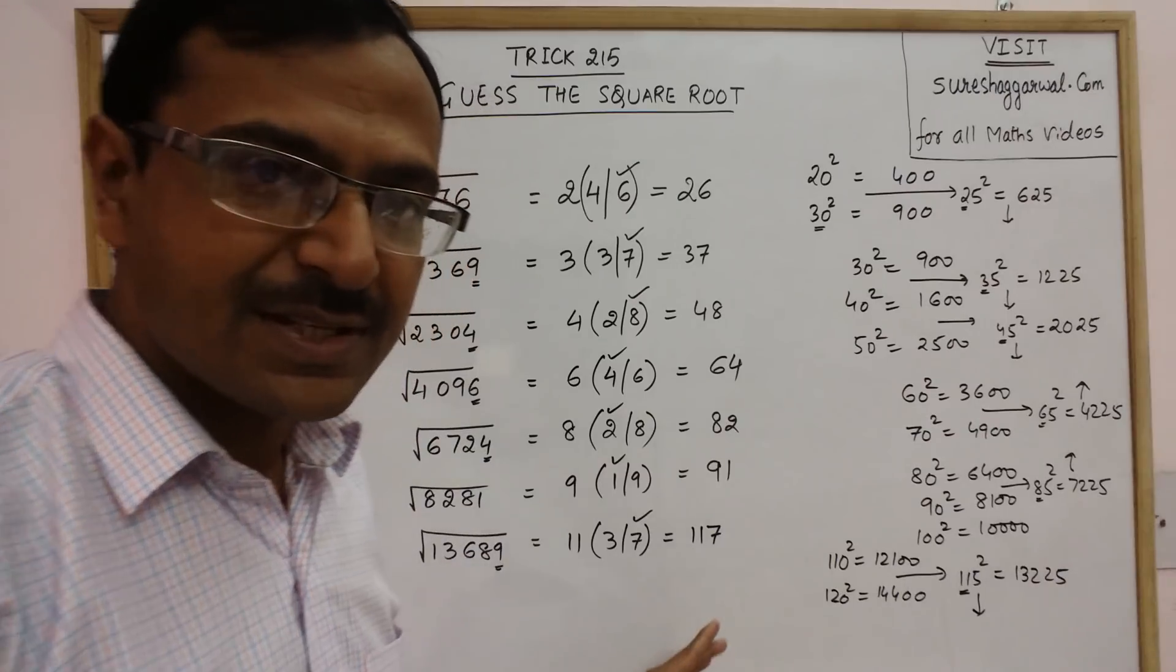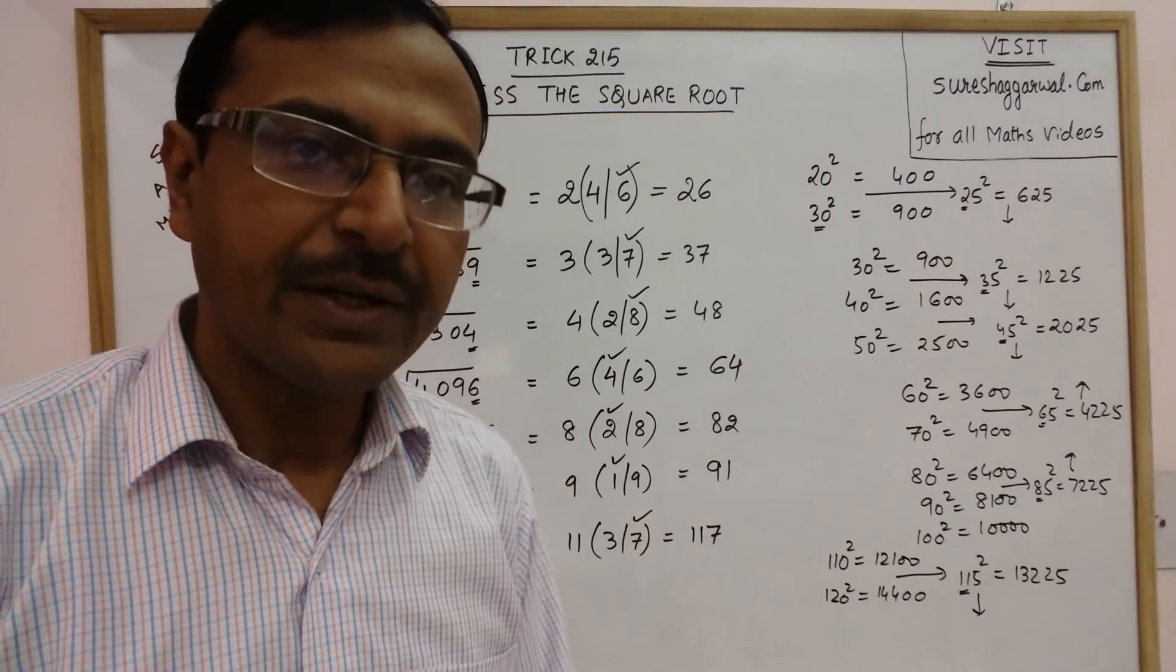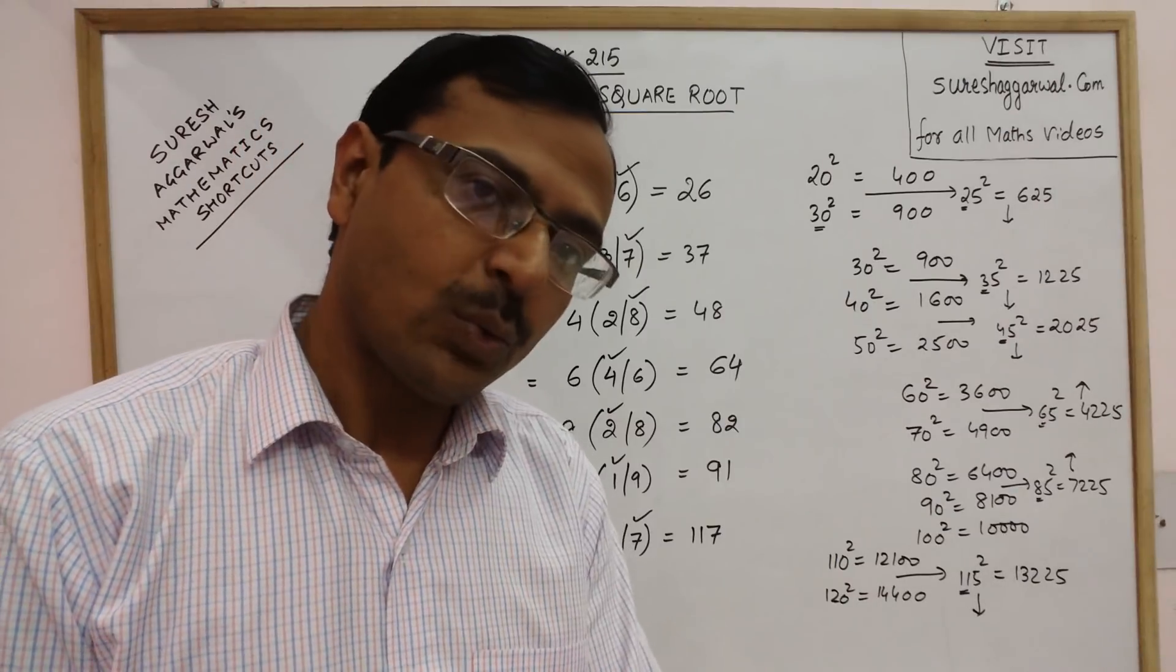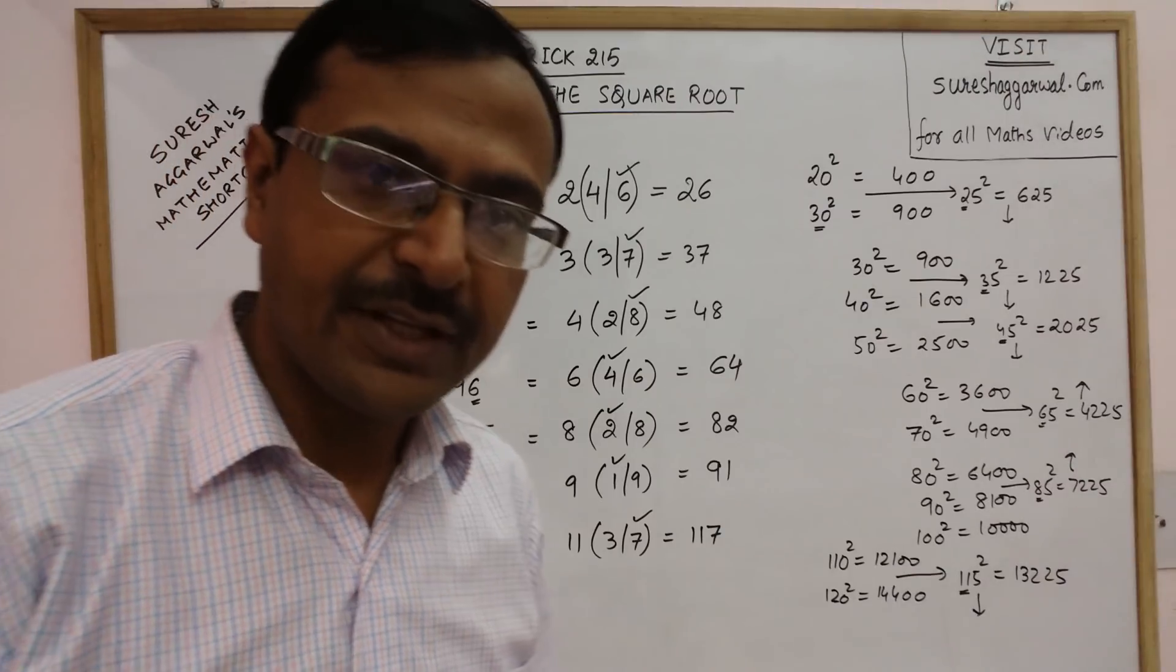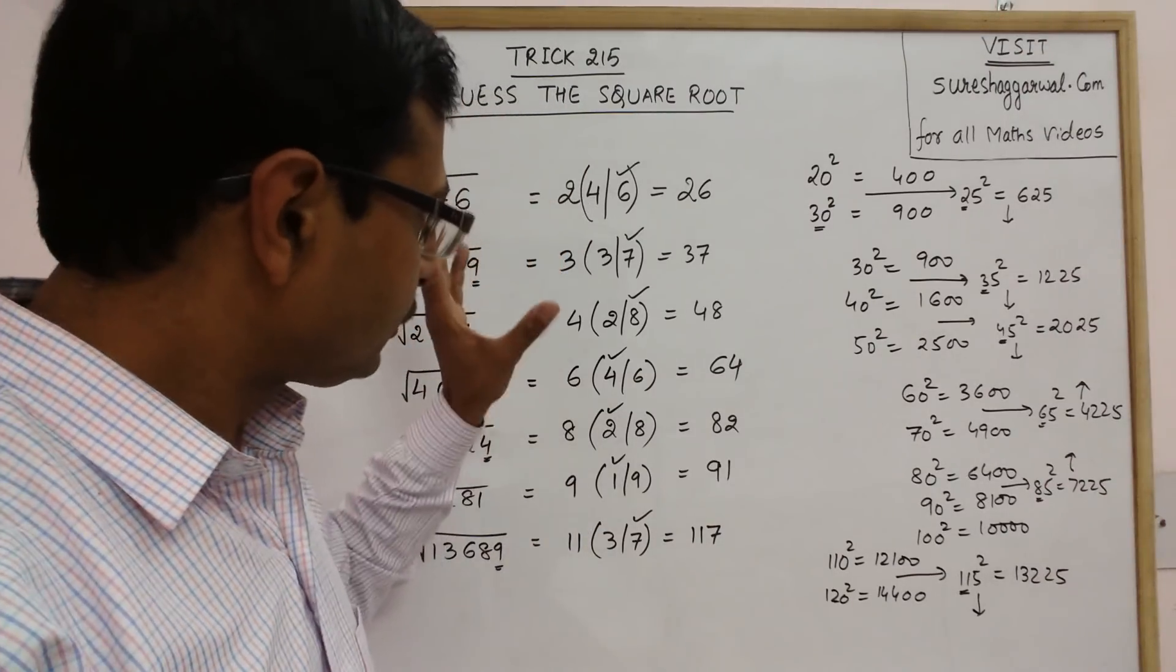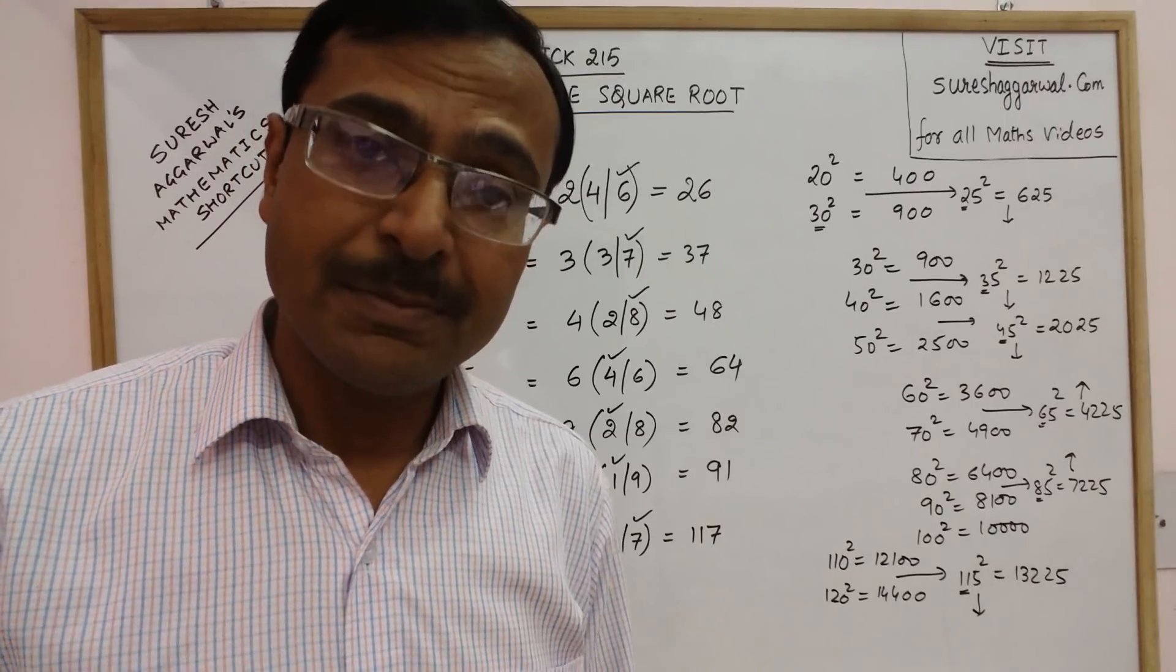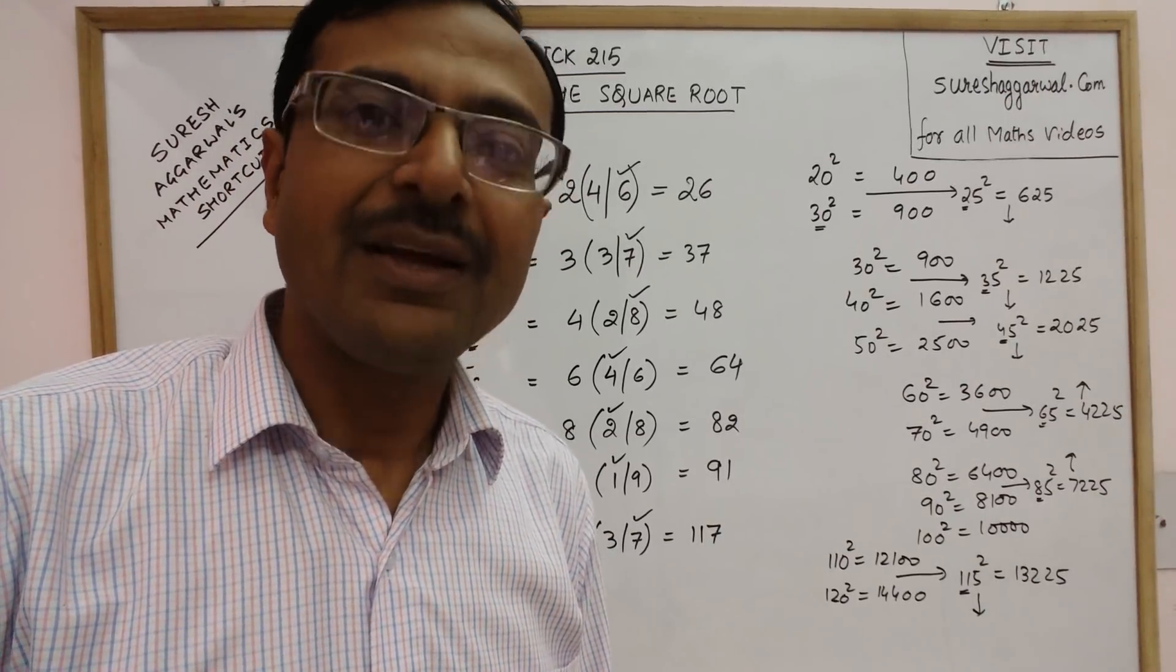In the first instance when you start solving these square roots with this method, you will find it a little bit difficult. But within a practice of half an hour, you can find square roots of even large five-digit numbers orally within 7 to 8 seconds' time without writing anything. Just by looking at the number you will be able to find the square root. So keep learning these amazing methods for success in competitive exams and subscribe the channel if you like it.